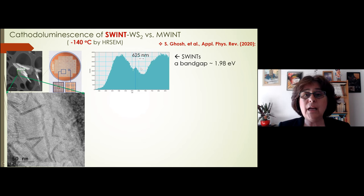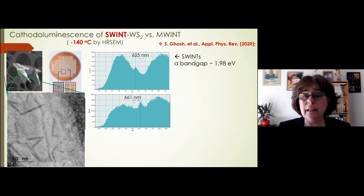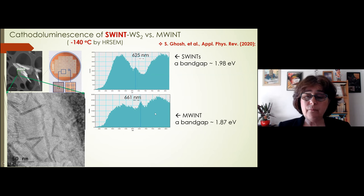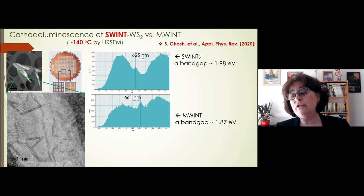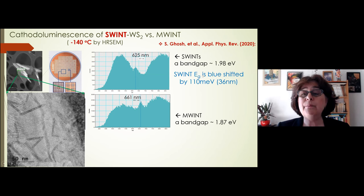We observed an interesting phenomenon. For single-wall nanotubes, we obtained a cathodoluminescence peak at 625 nanometers, corresponding to a 1.98 eV band gap. For multi-wall nanotubes, the peak shifts to 661 nanometers, corresponding to 1.87 eV. So single-wall nanotubes have a larger band gap, blue-shifted by approximately 110 meV or 33-36 nanometers compared to multi-wall nanotubes. This is the quantum confinement effect in the direction perpendicular to the layers.